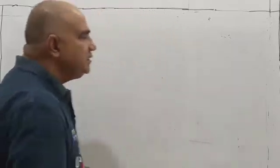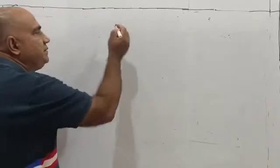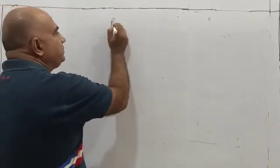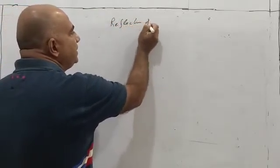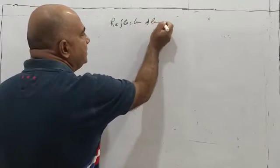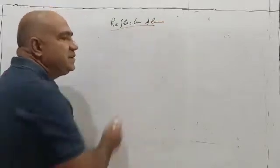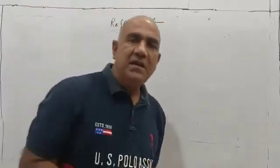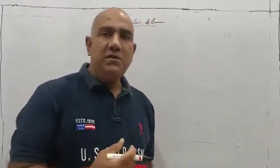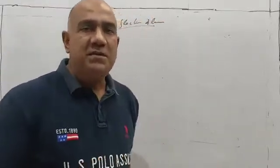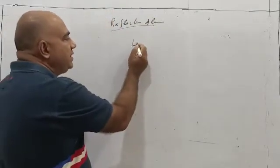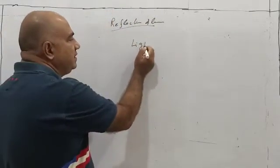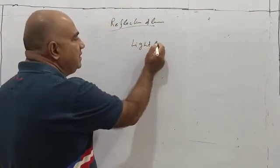Today we are going to study certain terms in the chapter 'Reflection of Light.' This is the name of the chapter in Class 10 Physics. And today we are going to study some frequently used terms. The first one is: light ray.